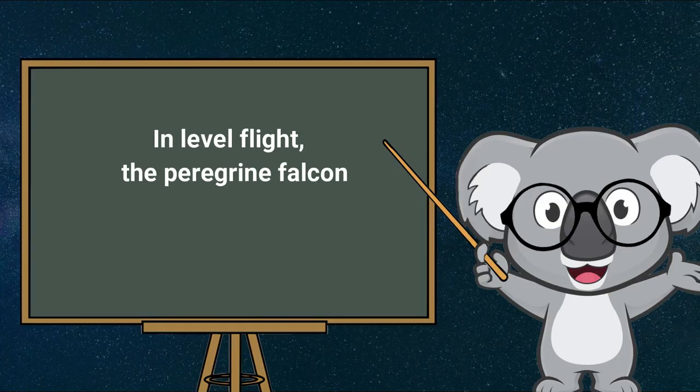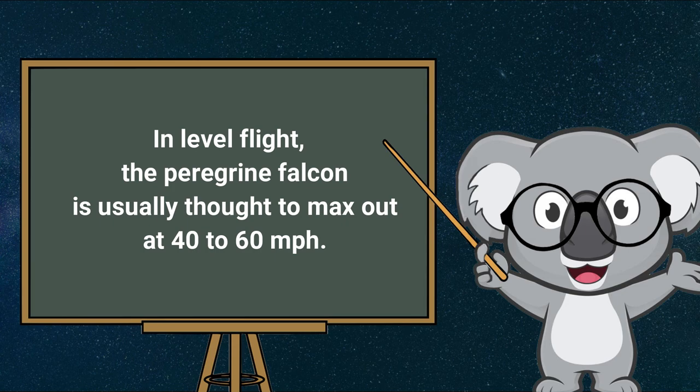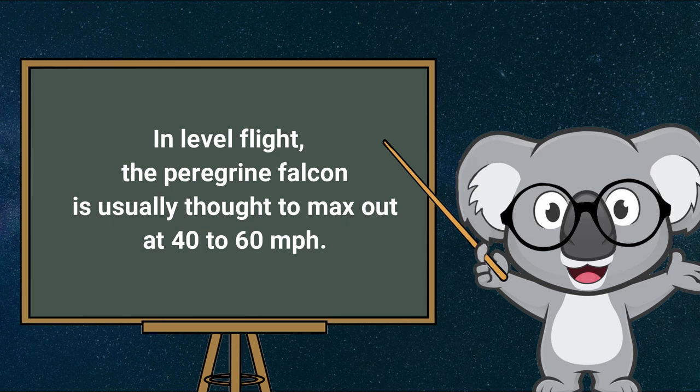In level flight, the peregrine falcon is usually thought to max out at 40 to 60 miles per hour. Fast, but not ridiculously so.